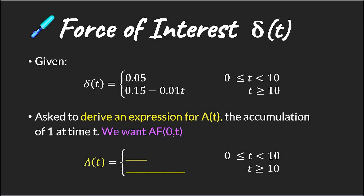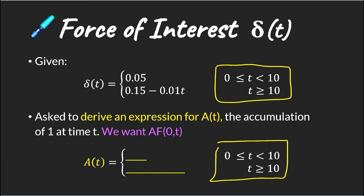Since our force of interest function is defined over two different periods, we need to ensure that our accumulation function is also defined over those same two different periods. For the first period we integrate from time 0 to t. For the second period where t is greater than 10, we need to integrate from time 0 to 10 — because we've already covered that period — and then also integrate from time 10 to time t. This involves two different integrals multiplied together. It's important to understand the period you're working over to ensure you're using the right force of interest variables.